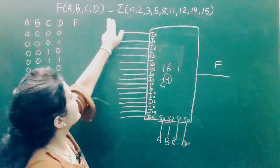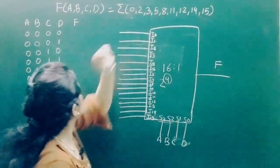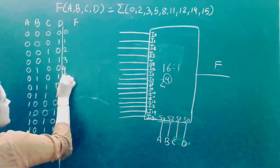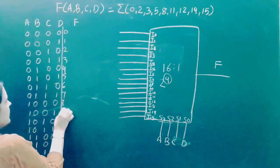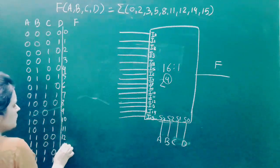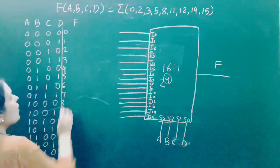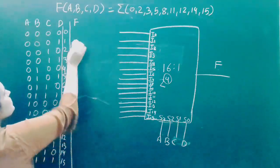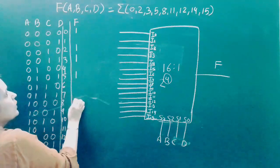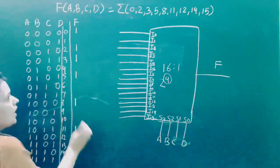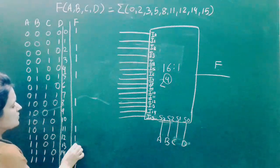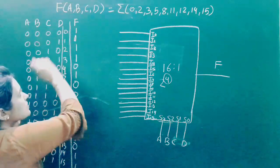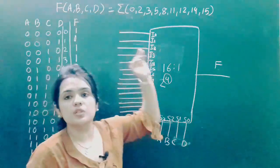F is high at min terms 0, 2, 3, 5, 8, 11, 12, 14, and 15. For all remaining min terms, F is 0. This forms the truth table corresponding to this Boolean function, with A, B, C, D as selection lines.